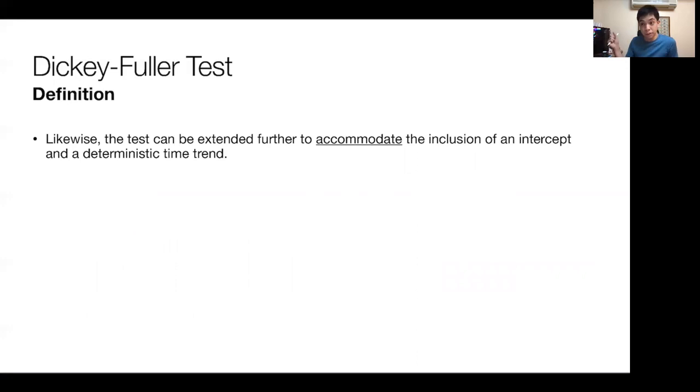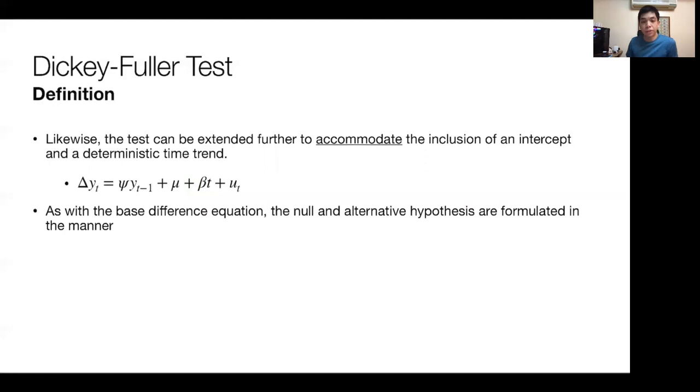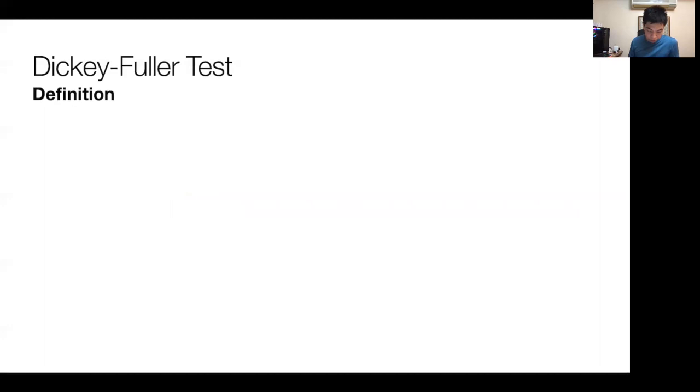The test can be extended further to accommodate the inclusion of an intercept or deterministic time trend, which you may feel should be included if you have some expectation or knowledge about the series you're trying to test. You can include this deterministic time trend or intercept. As with the base difference equation, the null and alternative hypotheses are formulated in this manner.